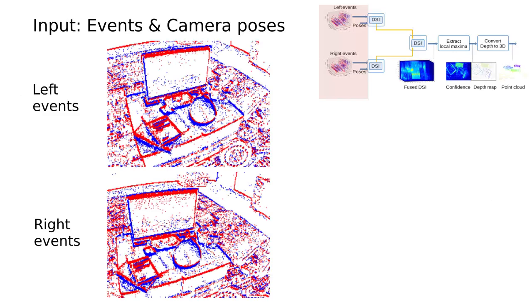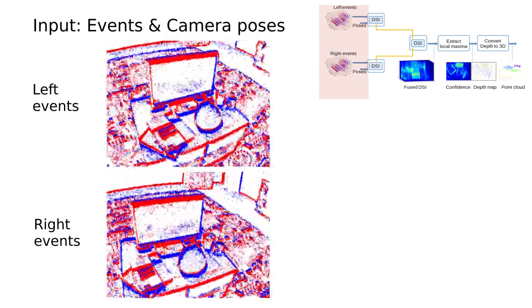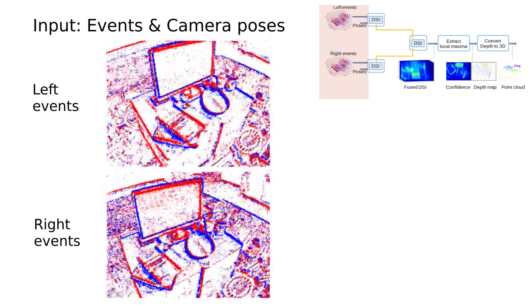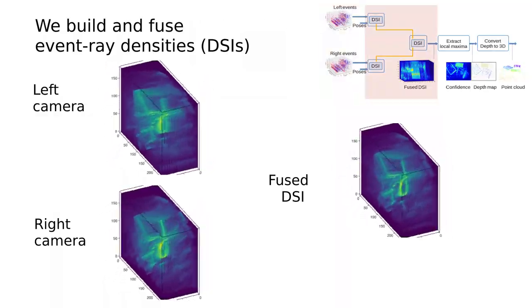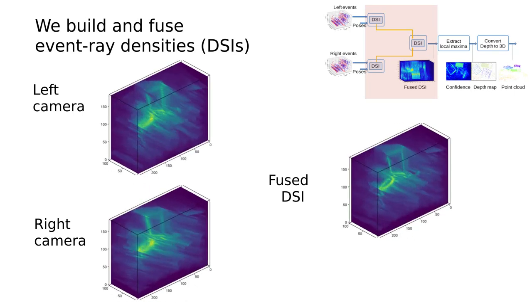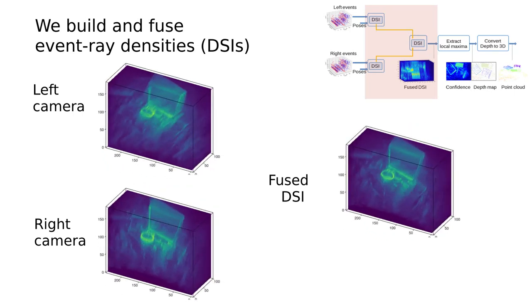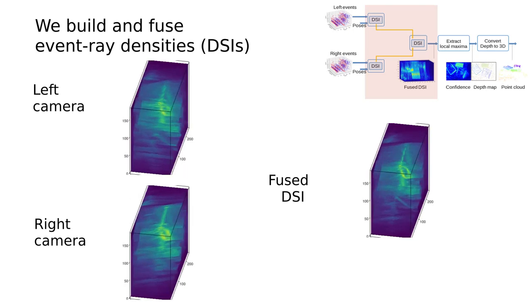Using known camera poses, stereo events are back projected as rays into individual event ray densities called DSIs. The individual DSIs are then fused using element-wise operations such as the harmonic mean. Several fusion functions are proposed in the paper.